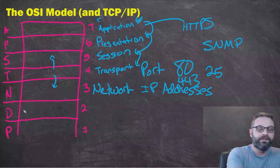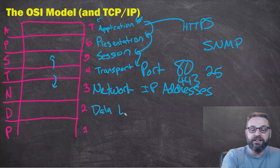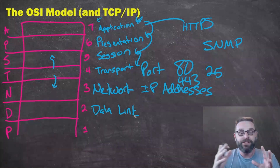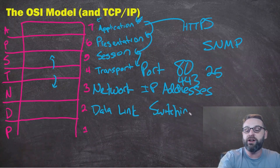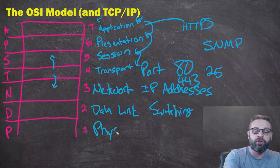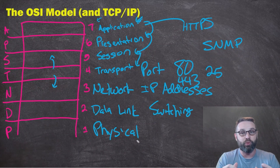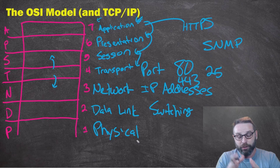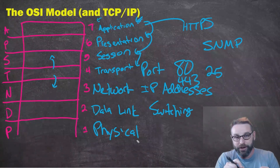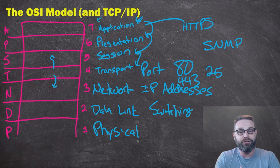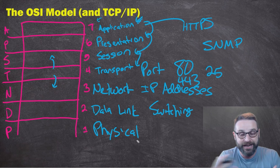Then we move down to layer two, the data link layer. A lot of people argue this is their most important layer because it's where they work the most. The data link layer is where switching takes place — where layer 2 switches move traffic from one device to the next. And lastly, the physical layer takes over: this is where the actual cabling is, where traffic is sent over the physical wire. We take the data, all the layers above it, and translate it into electrical pulses that are either a 1 or a 0. A certain frequency sent over copper wire is received on the other end, which interprets that binary into a full data packet.